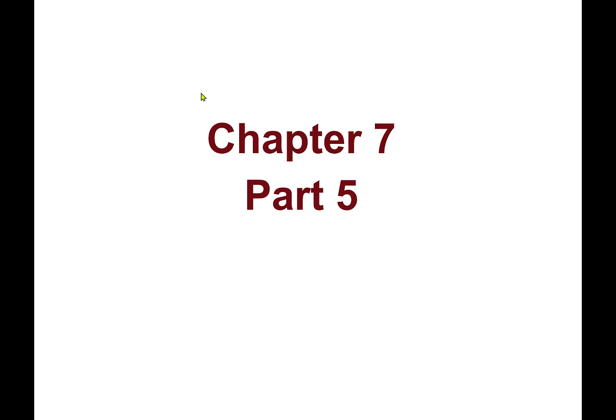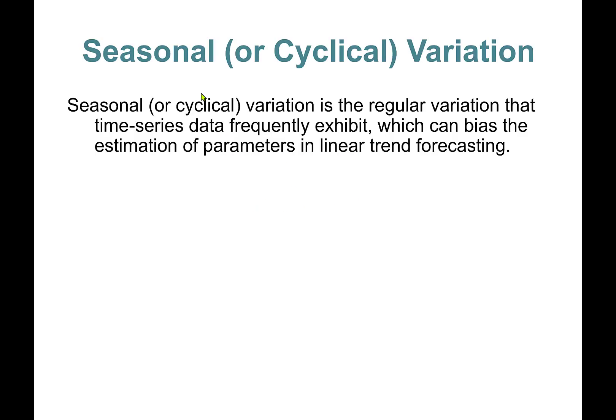Hello everyone, this is Chapter 7 Part 5 on demand estimation and forecasting. In this part we'll learn about how to handle seasonal or cyclical variation in our models. Seasonal or cyclical variation is the regular variation that time series data frequently exhibit, and this can bias the estimation of parameters in linear trend forecasting unless we account for it.